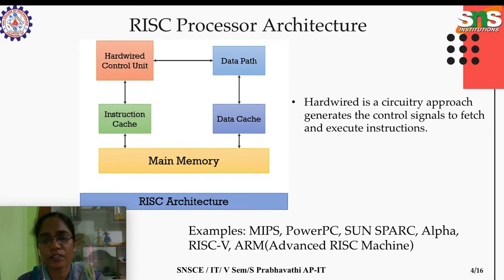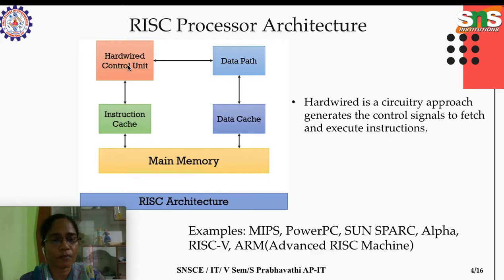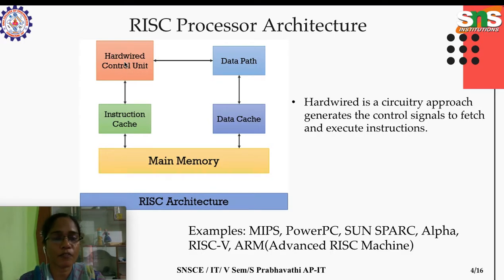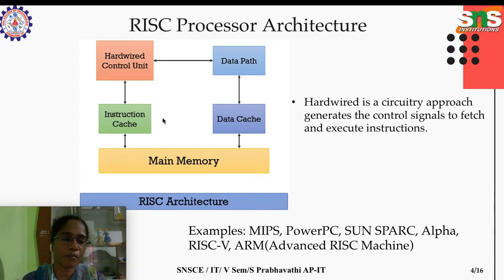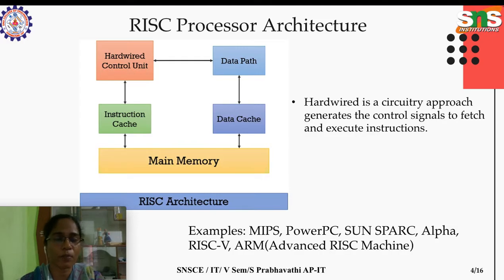In RISC, hardware means a circuitry approach that generates control signals to fetch and execute instructions — it is not a programmable approach. The circuits generate control signals to fetch instructions and data. The instruction could be either in memory or in cache. Frequently accessed information is placed in cache so that processing time is reduced and performance is increased.